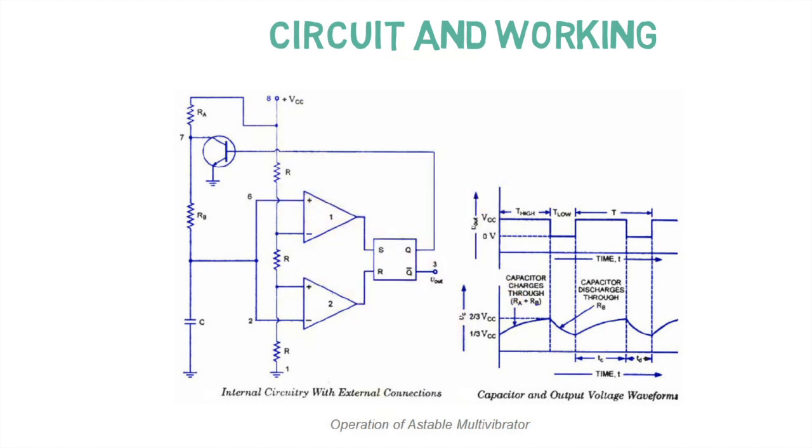When the low voltage is applied at the fourth pin, which is the reset pin of the IC555, then it will again reset the IC. When the low signal is applied to the base of the Q2 transistor, then it switches on by the capacitor.